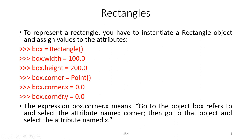How do we read the expression box.corner.x? It means: go to the object box, select the attribute named corner. Since corner is itself an object, we then go to that object and select the attribute named x. So box.corner.x navigates through the nested objects.